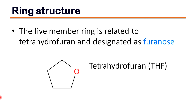The five-membered ring can also be formed as the outcome of an intramolecular nucleophilic attack by the hydroxyl oxygen atom attached to C4 on the carbonyl group and hemiacetal formation. The five-membered ring is related to tetrahydrofuran and is designated as furanose. THF, or tetrahydrofuran, is an organic compound with the formula C4H8O, classified as a heterocyclic compound, specifically a cyclic ether.